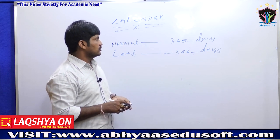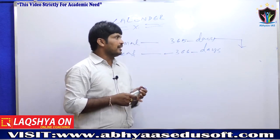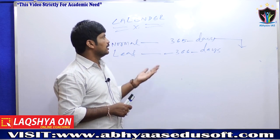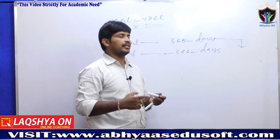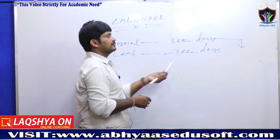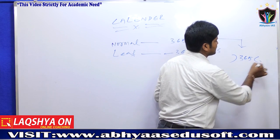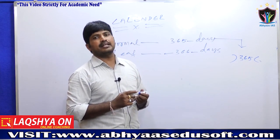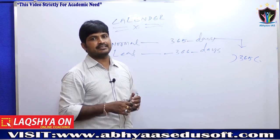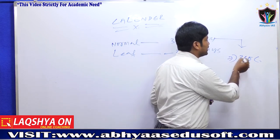From this concept, if anyone asks to find out any day in any year, we can answer based on odd days. Let us calculate how many odd days are there in a normal year. A normal year has 365 days, and since a week consists of 7 days, we divide 365 by 7.